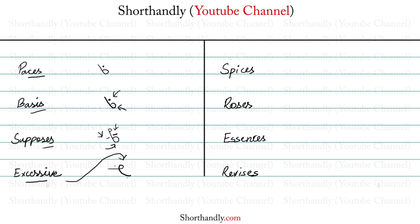The next word is SPICES. Again, we have SES, so SPICES will be written like this. We also have the I diphthong in the word SPICES, so to represent this I diphthong, we simply put the diphthong here. And that's how you write the word SPICES.